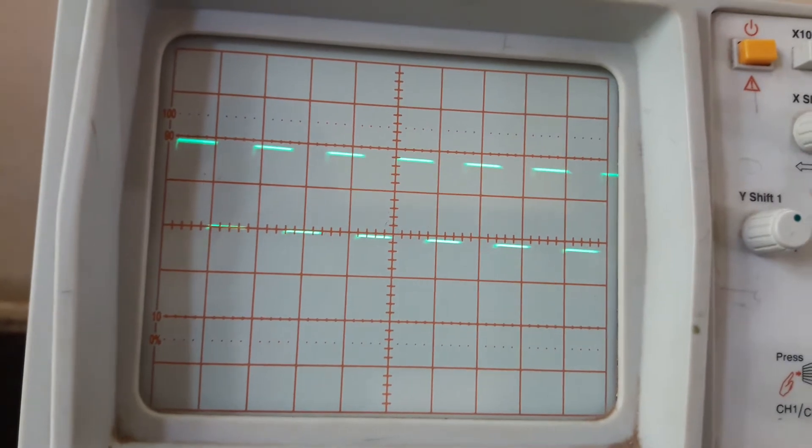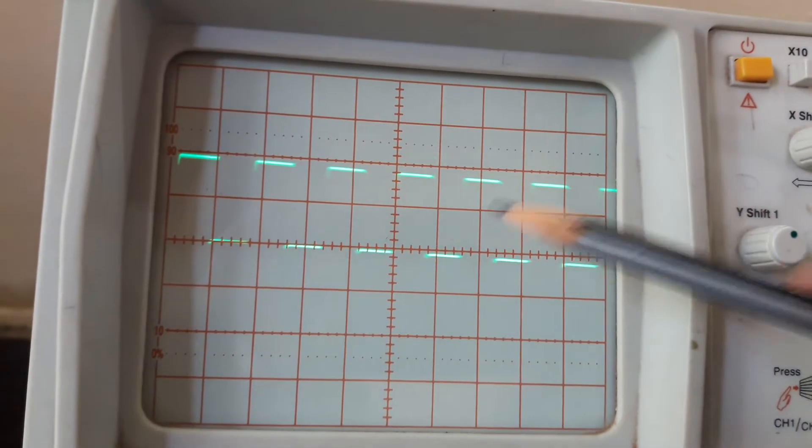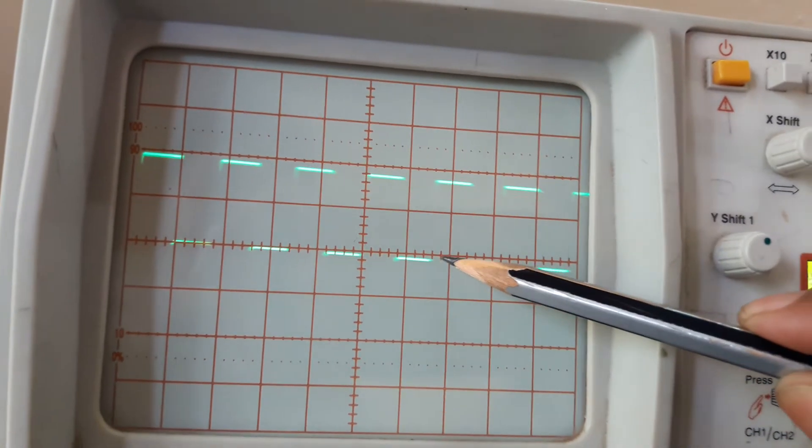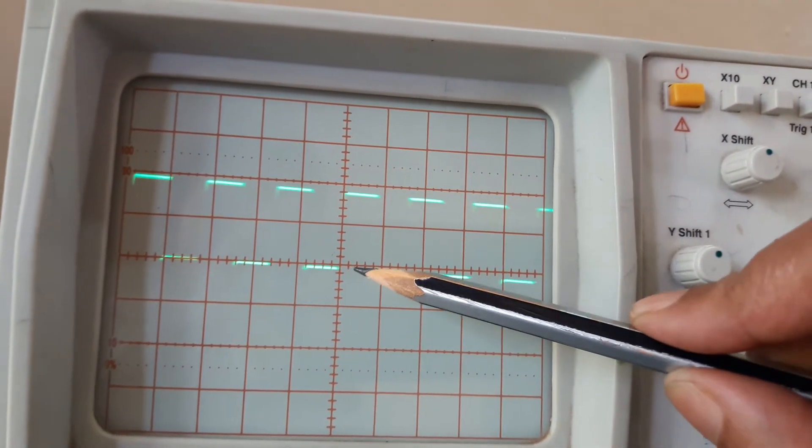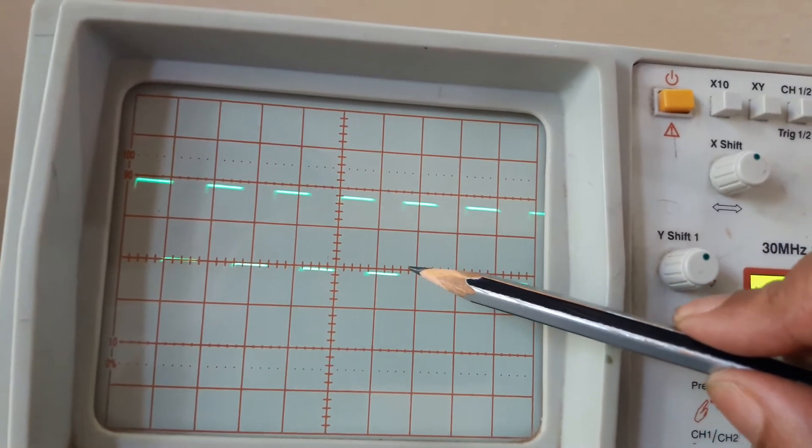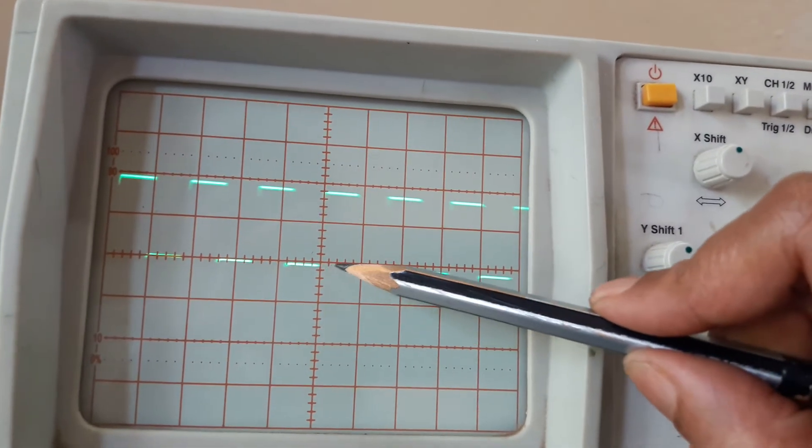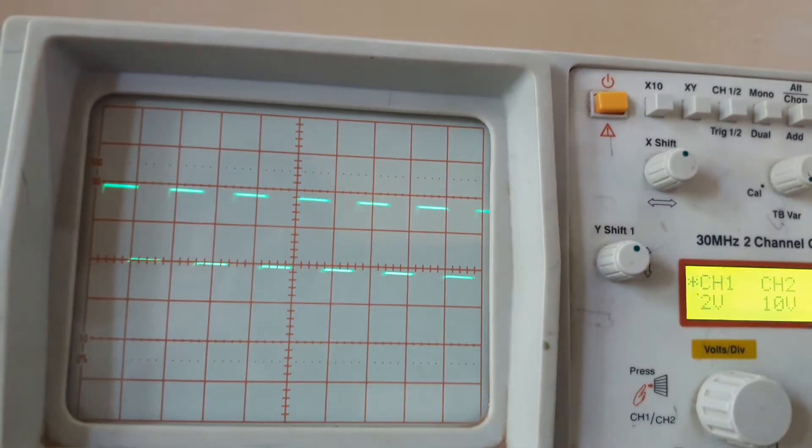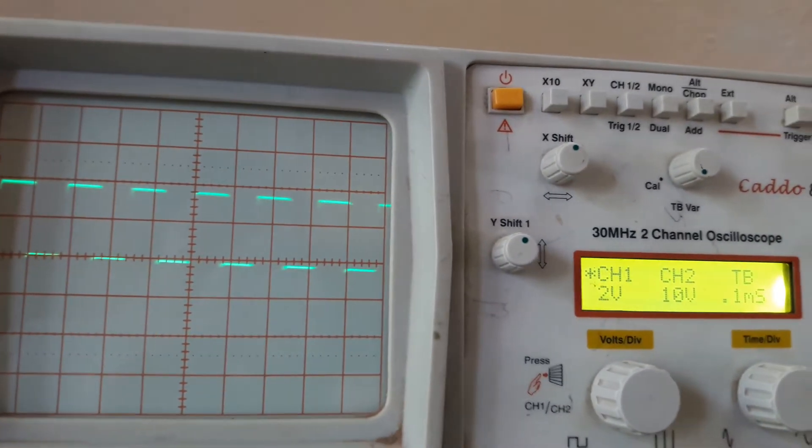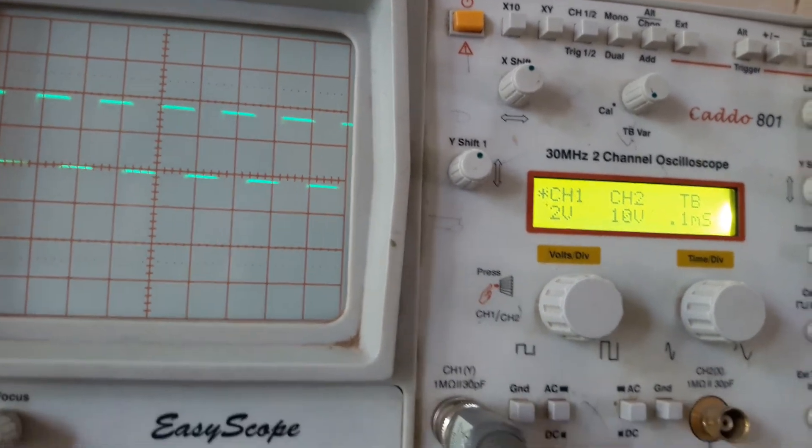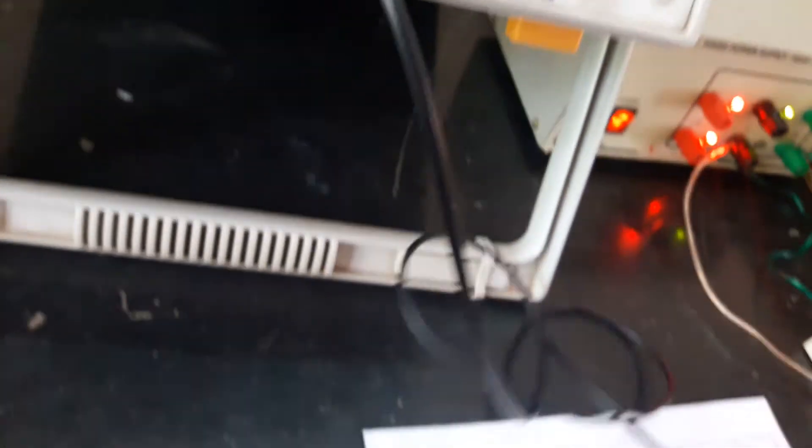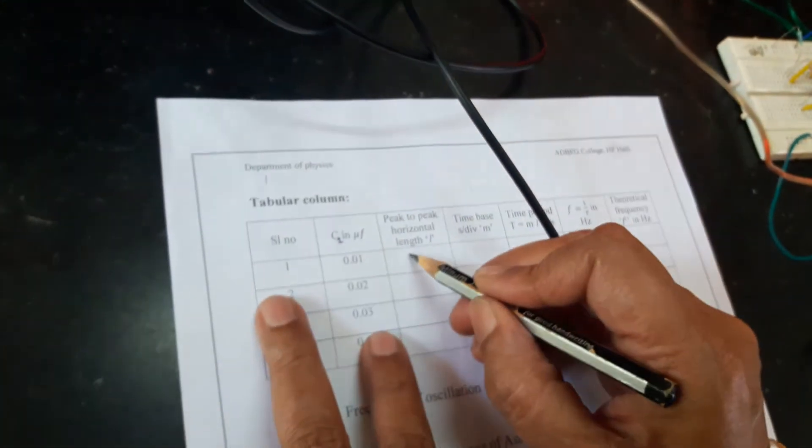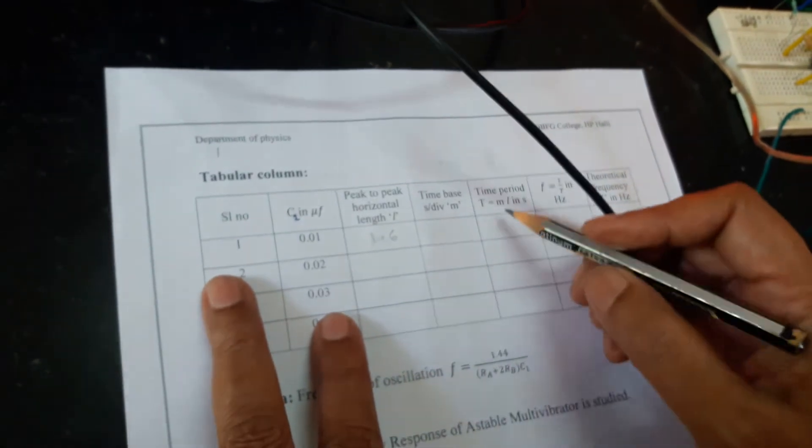Now, we have to measure peak to peak voltage. This you take it as a reference from this peak to this peak we have to measure the voltage. It is coming around 1.6 here. See, this one block is 1 and 3 small lines are there, 1.6 and now we will tabulate the reading in the tabular column. So, for 0.01 microfarad, we are getting it as 1.6 horizontal peak to peak length.